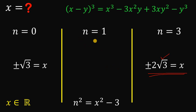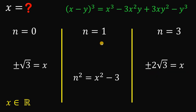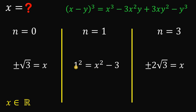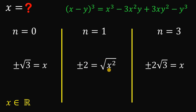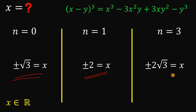For case 2, n equals 1: substituting gives 1 squared equals x squared minus 3, so 1 equals x squared minus 3. Adding 3 to both sides gives x squared equals 4. Taking the square root gives positive or negative square root of 4, which equals positive or negative 2. So we now have six possible values for x: positive or negative square root of 3, positive or negative 2, and positive or negative 2 times square root of 3.